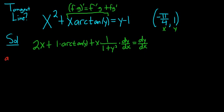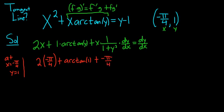So at x equals negative pi over 4 and y equals 1 we have the following: 2 times negative pi over 4, that's our x, plus 1 times arc tan of y, so that will be arc tan of 1, plus x which is negative pi over 4. I'm going to put it in parentheses, times 1 over 1 plus 1 squared, because y is 1, dy dx equals dy dx.